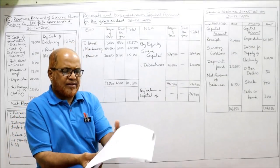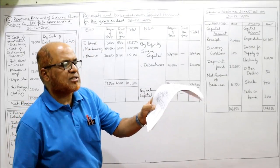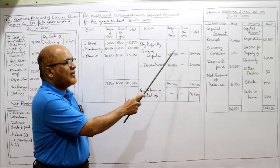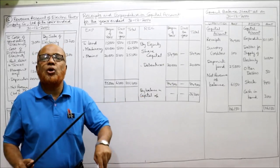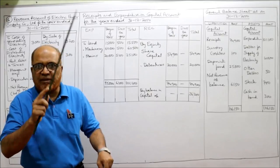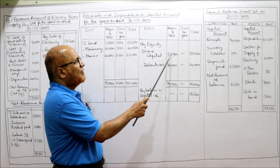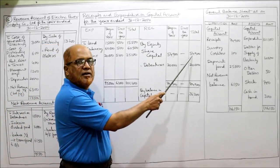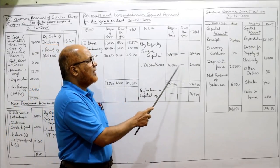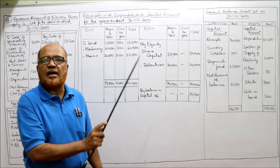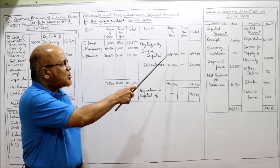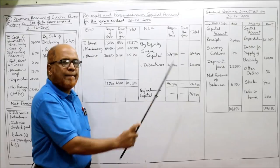First item on receipts side: equity shares 54,900 — no issue during the year, so by equity share capital 54,900 at beginning and total. Second item: debentures 20,000 — by debentures 20,000 at beginning, total 20,000. Only two items on the receipts side: share capital and debentures. Total receipts: 74,900.